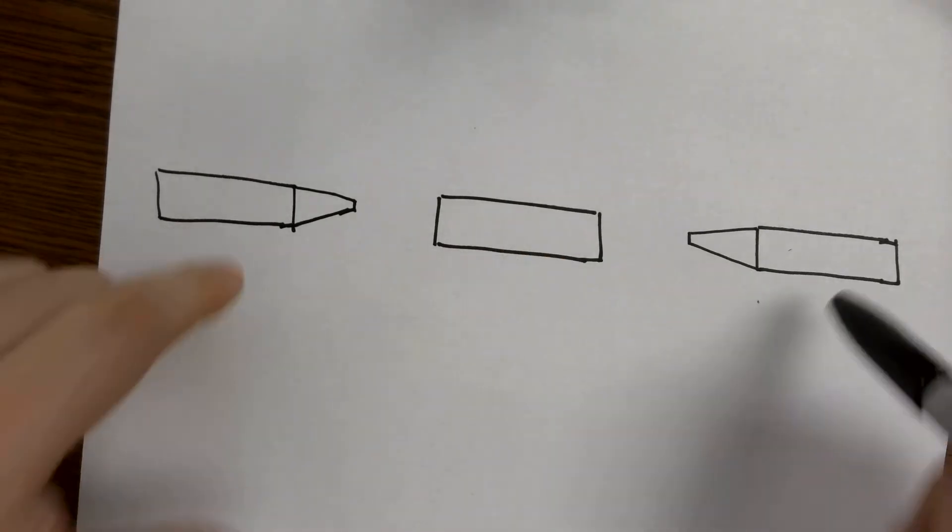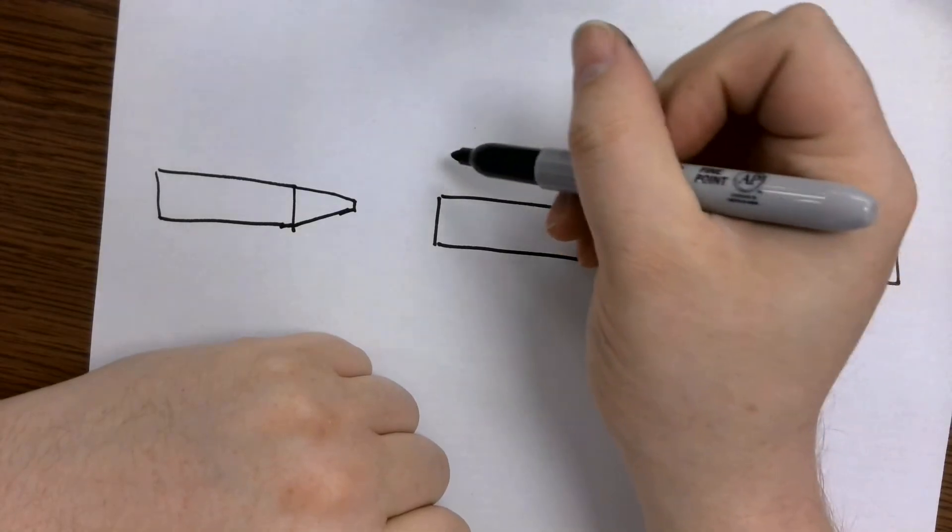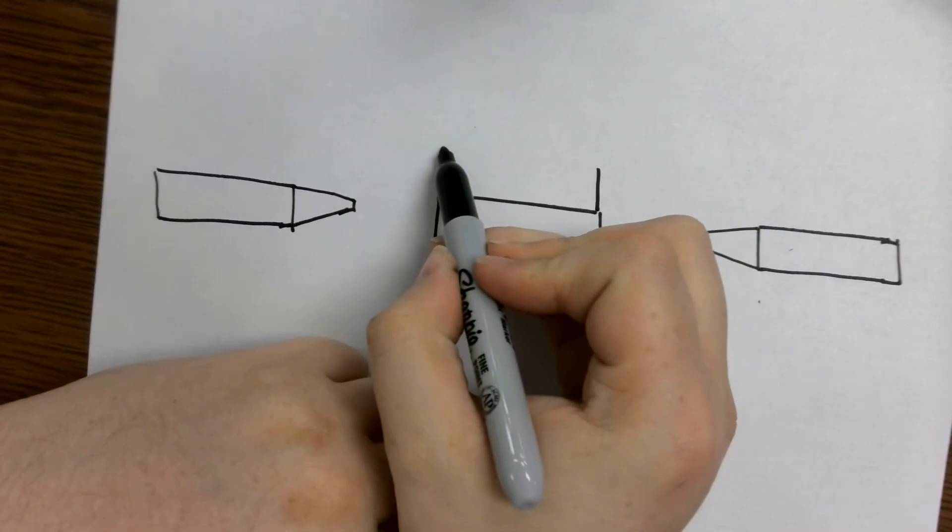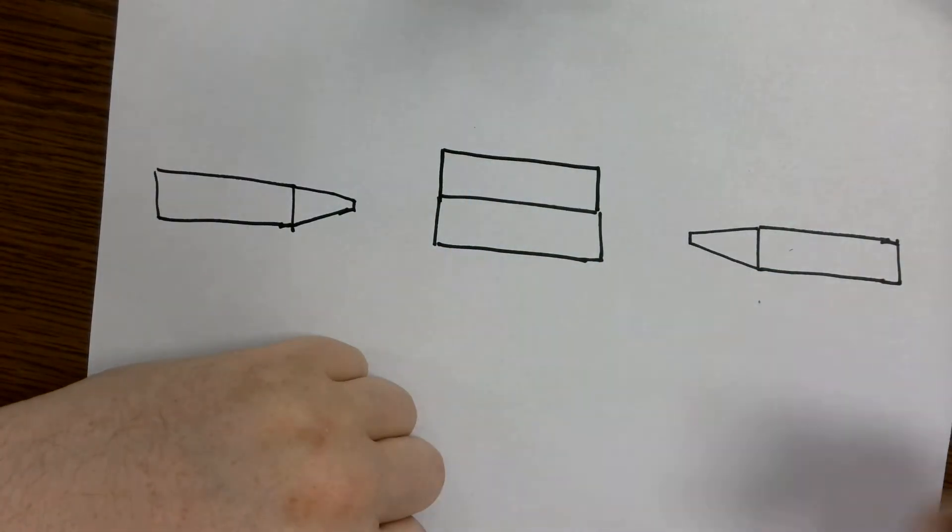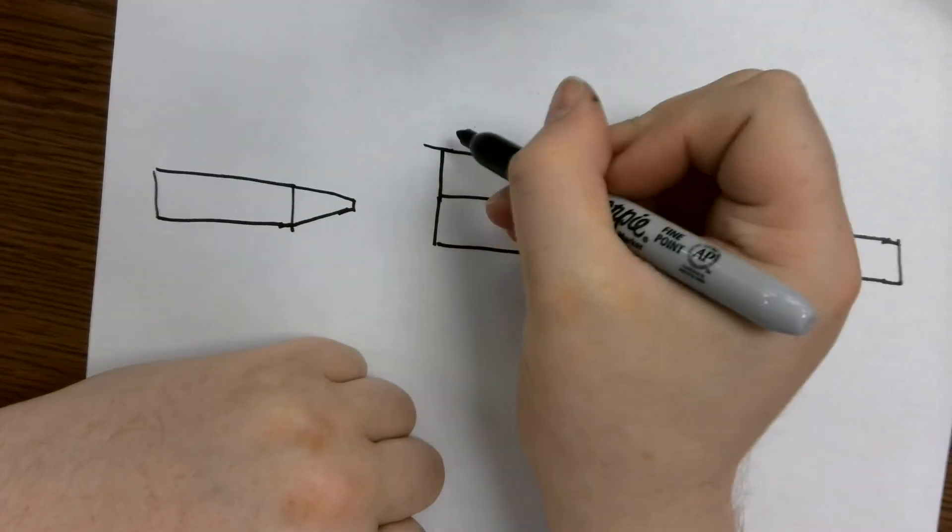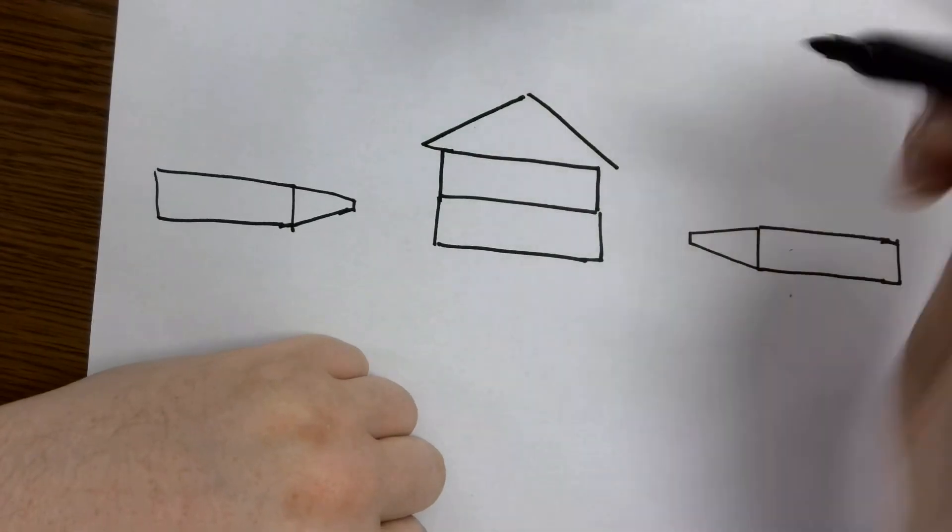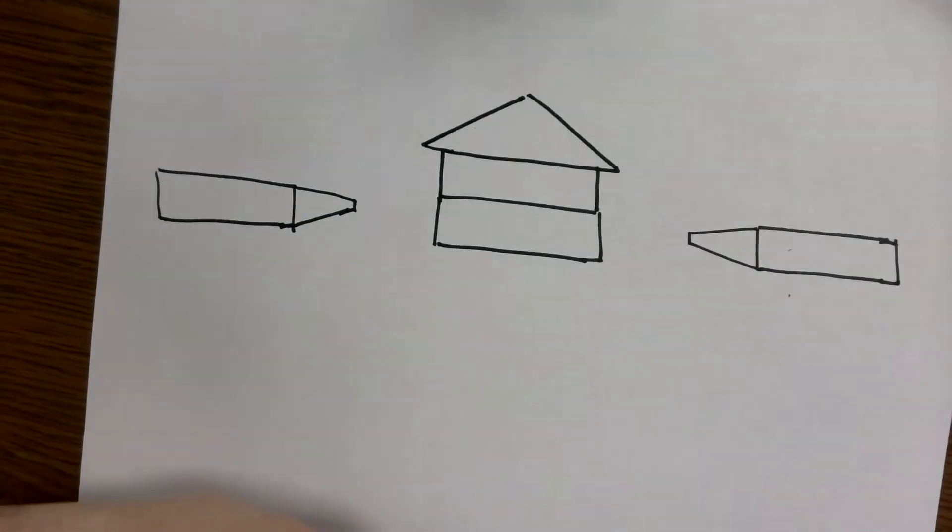This one looks like it's in the middle, and these two look like they're off to the side. Well, now I'm going to add a second story to my little house by adding another little rectangle. And I'm going to add a roof, just a basic triangle on top. Nothing too fancy.